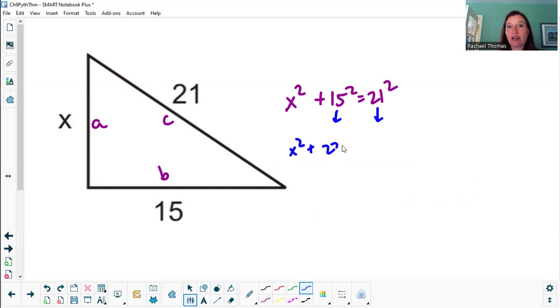15 squared, I ask my calculator is 225. 21 squared, I ask my calculator is 441. So then when I do a little subtraction here to get x alone, just have to do a little bit of algebra, I get x squared equals 216.